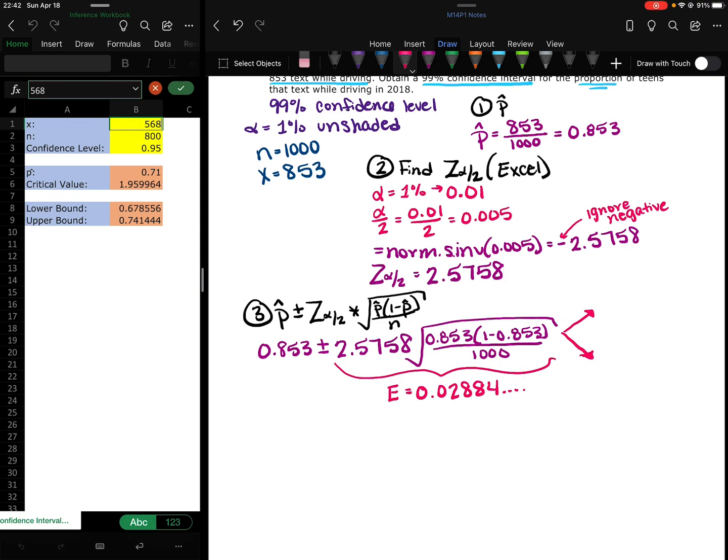And add it. So this is my upper bound, shorthanded to UB, and my lower bound, you can shorthand it as LB.